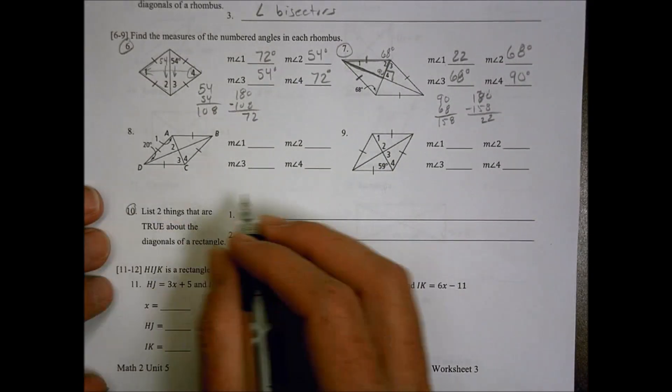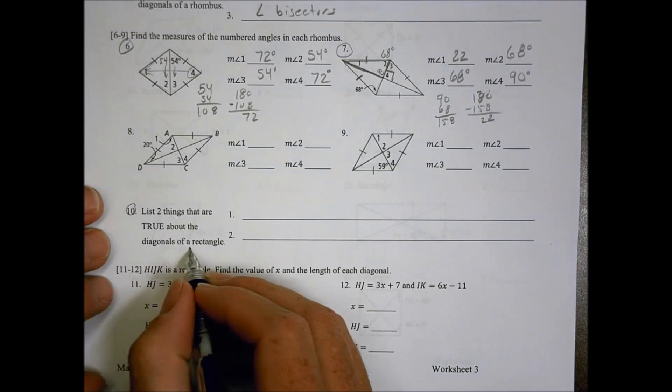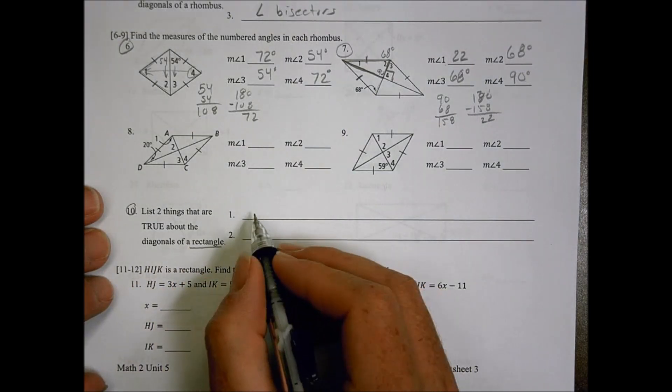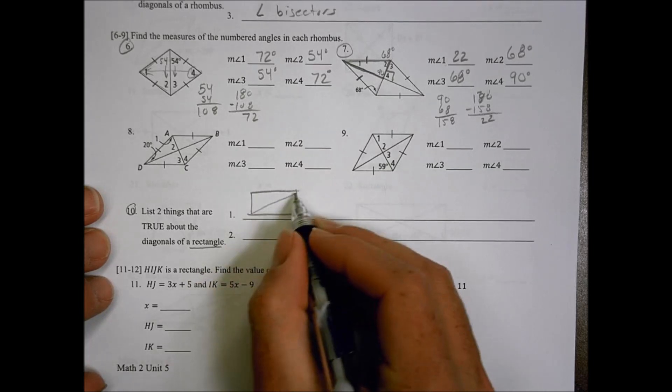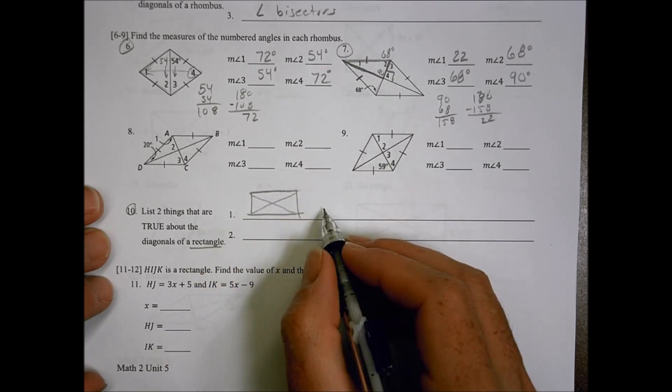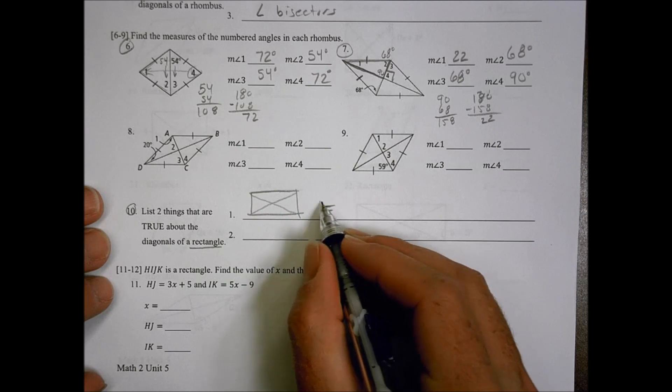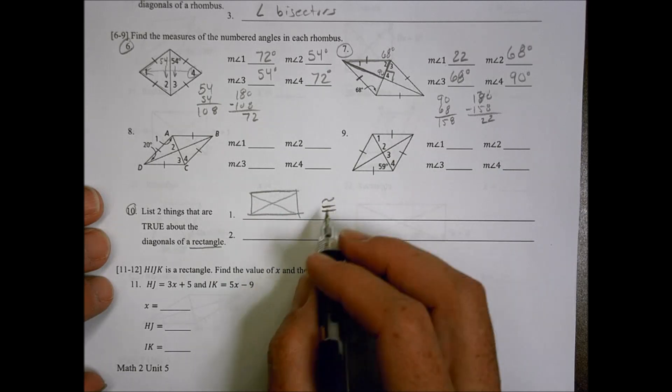Number 10. List two things that are true about the diagonals of a rectangle. For the diagonals of a rectangle, those ones there, we would say the diagonals are going to be congruent. That's the first thing we would say.